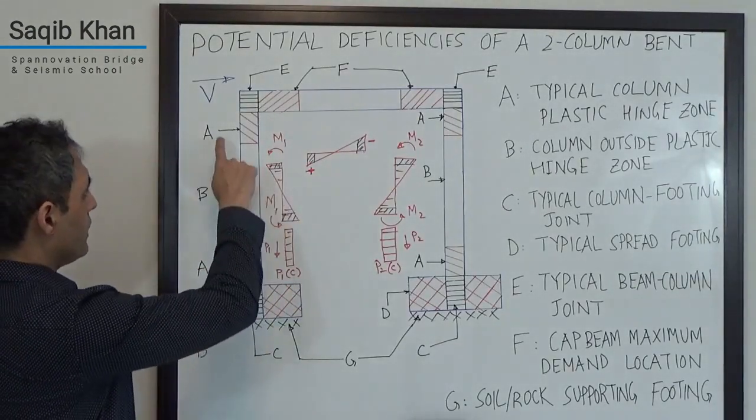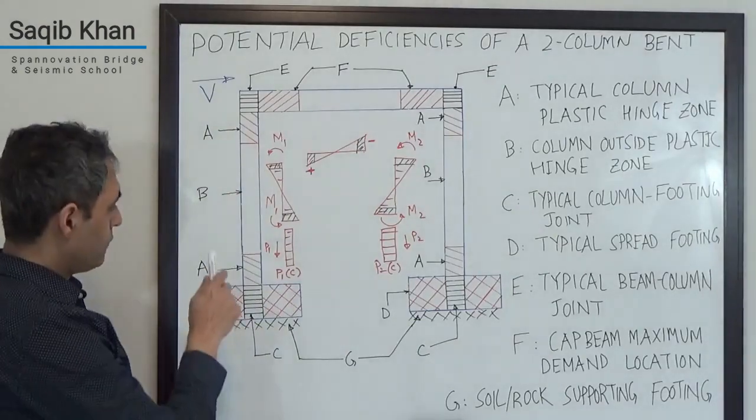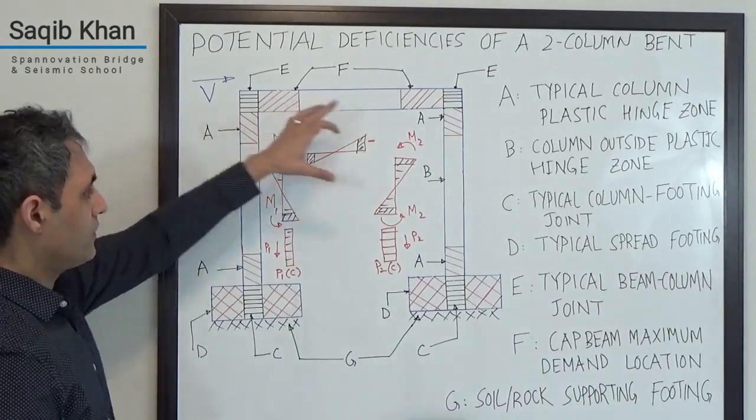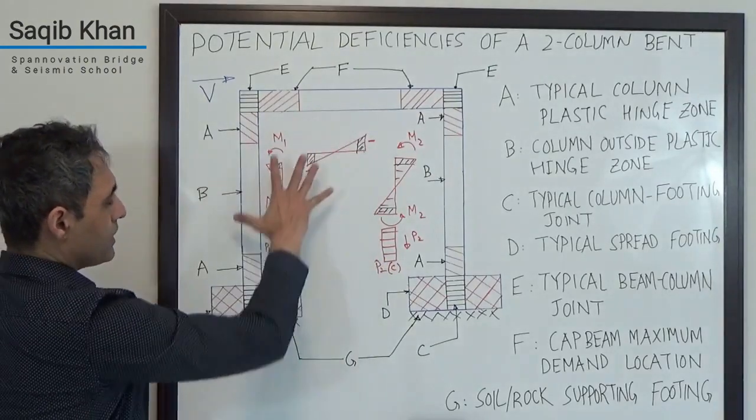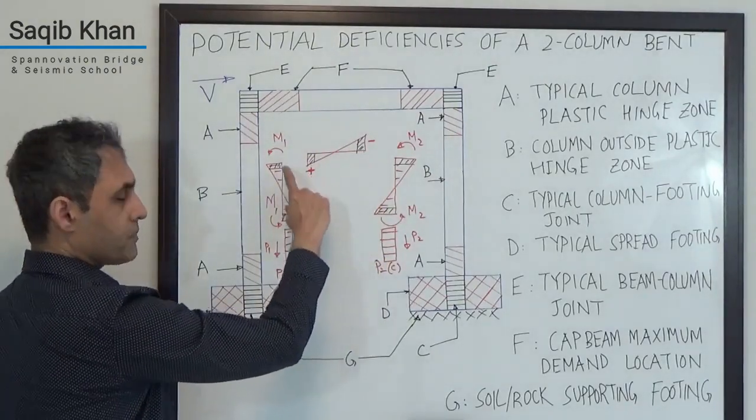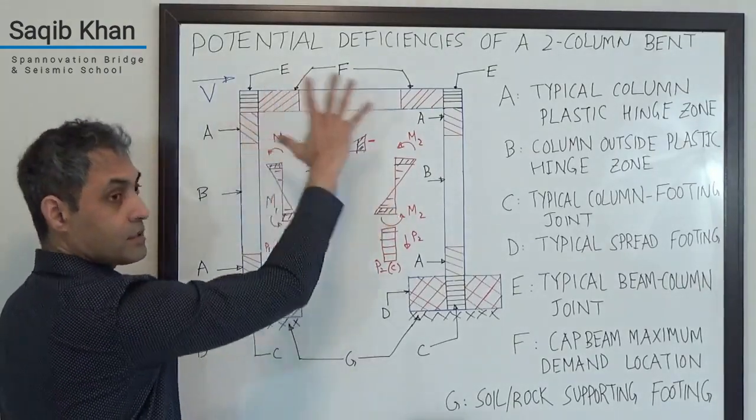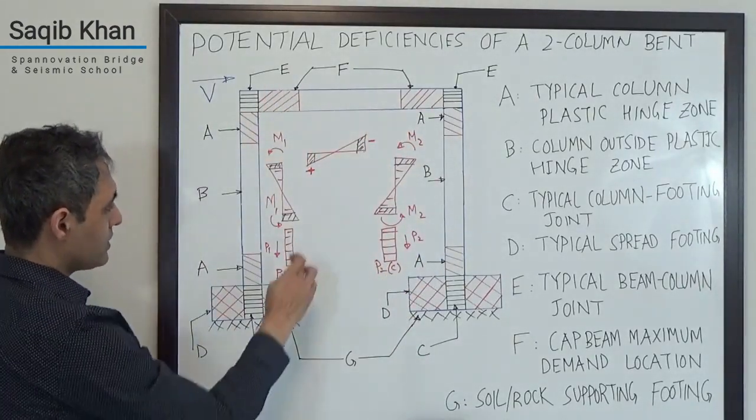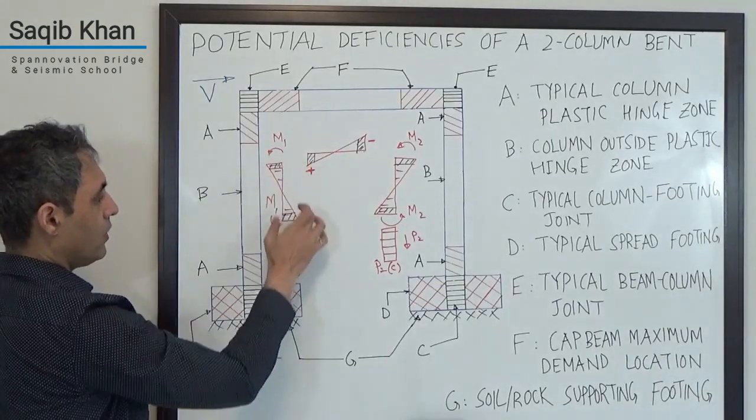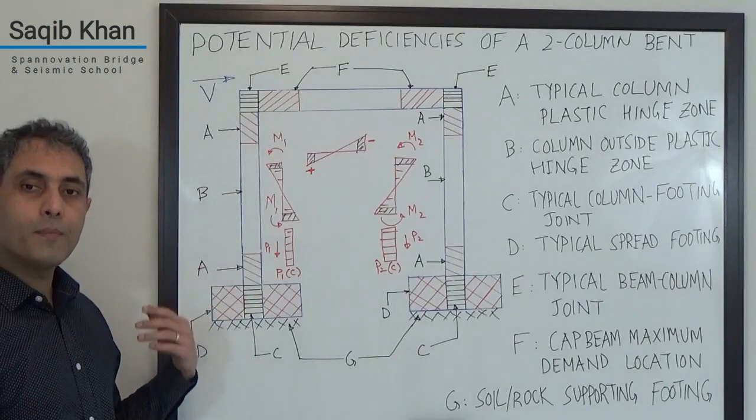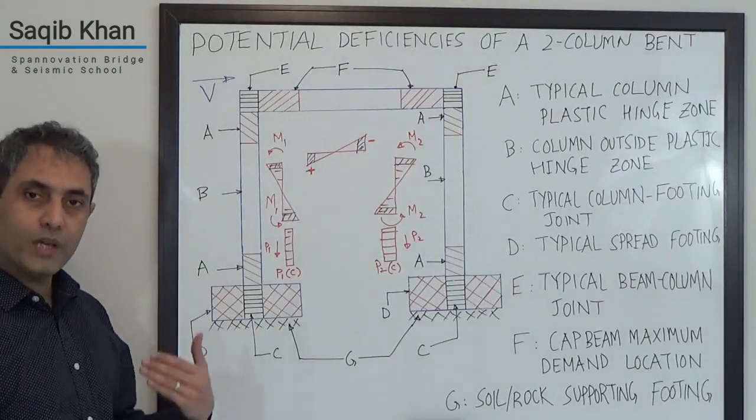I want you to focus on Zone A. There are four typical zones out here at the bottom and the top of the bent. I have just drawn these Mickey Mouse cartoons for the demands that these things will see under a seismic load. As you can see, the bottom and the top of the column see the highest demands. These indeed are the portions which we make purposefully weaker.